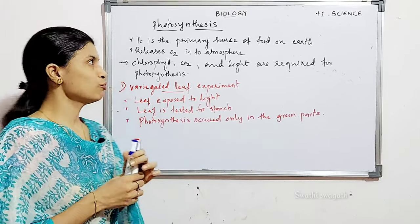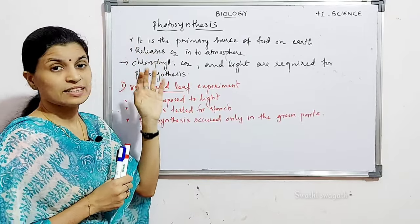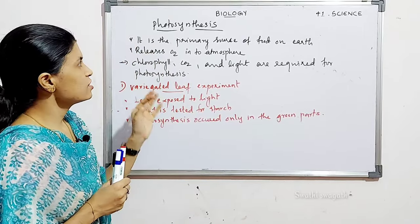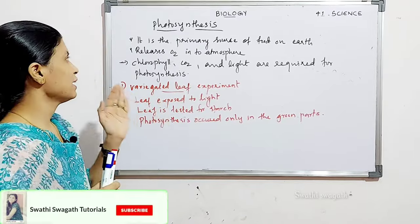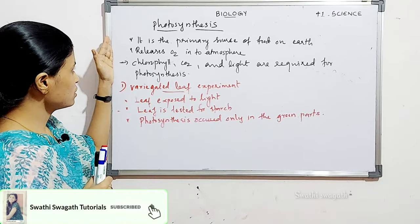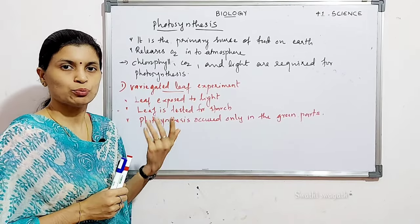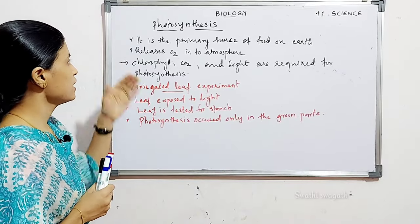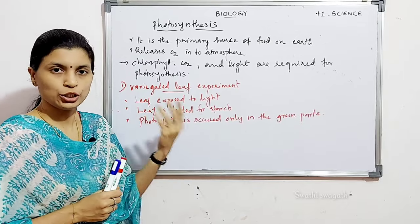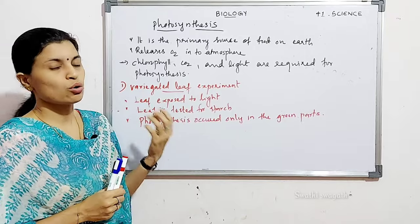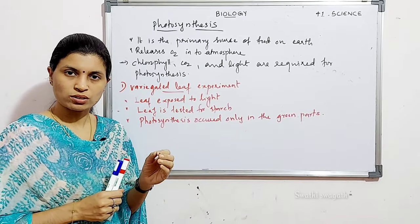Moving on to our chapter photosynthesis. The word literally means synthesis with the help of light, or synthesis in the presence of light. We know photosynthesis is the primary source of food on earth and green plants have the capacity to perform photosynthesis. As a result, plants release oxygen into the atmosphere. Photosynthesis also helps to maintain the amount of carbon dioxide and oxygen on earth.